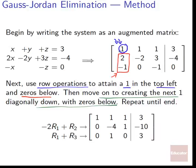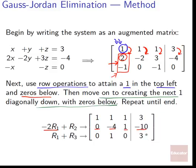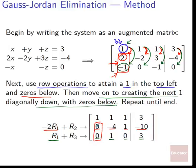In our example, we already have a 1 in the top left. So the next step is to turn the entries below it into zeros using row operations. We subtract 2 times row one from row two to eliminate the 2 there — getting 0, negative 4, 1, and negative 10. Then we add row one to row three to eliminate the negative 1, getting 0, 1, 0, and 3.